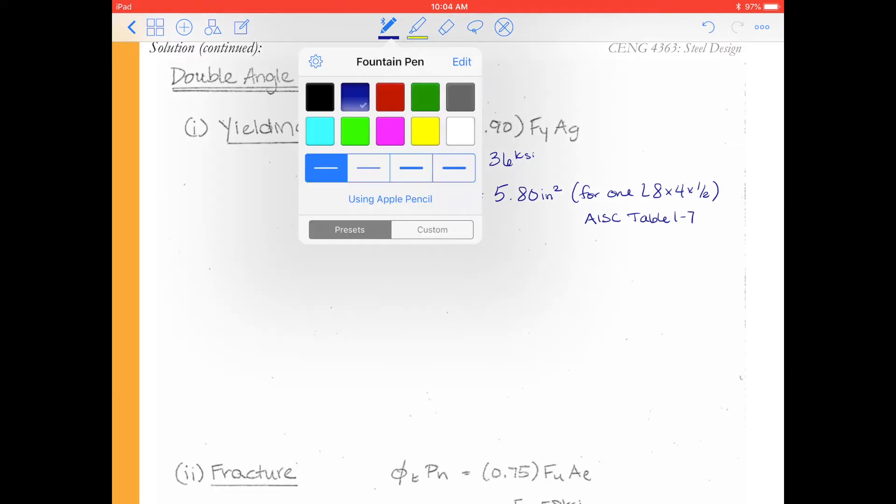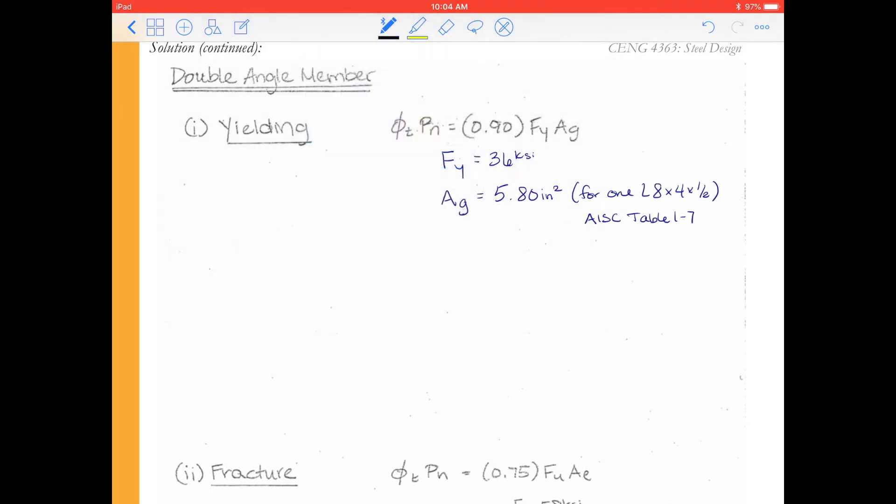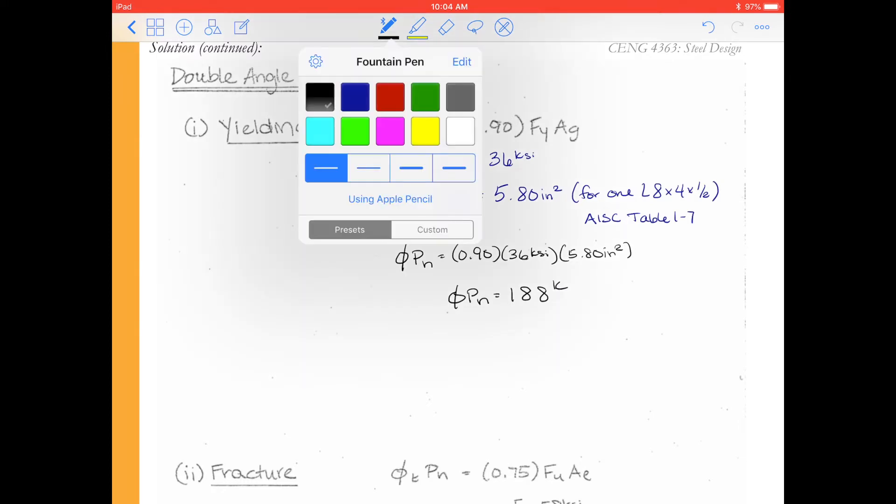Alright, so we go through our calculation. So we run through our calculations for φPn. So φPn is now 0.90 times 36 ksi times 5.80 inches squared. So φPn is 188 kips.